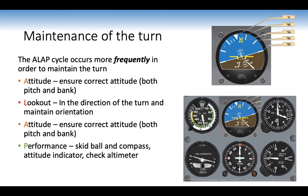Maintenance of the turn uses the ALAP cycle much more frequently. Attitude: ensure correct pitch and bank. Lookout in the direction of turn. Attitude again: pitch and bank. Performance: check that the skid ball is balanced, compass and attitude indicator show correct angle of bank — say 15 degrees — altimeter confirms you're level, and compass numbers are increasing if doing a right-hand turn.